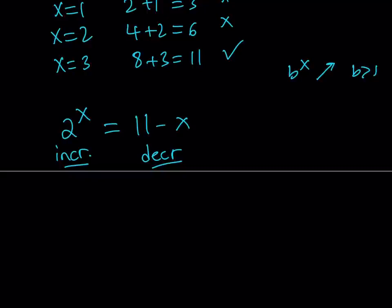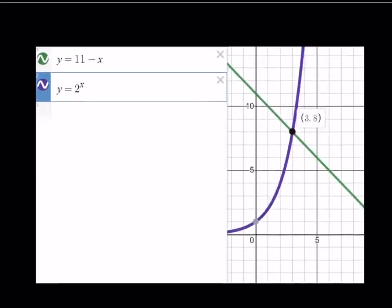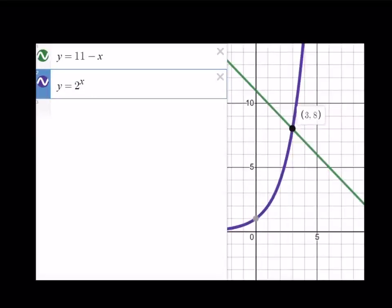Now, what happens if you have an increasing function and a decreasing function intersecting at a point? And that is going to be the only intersection point. So let's go ahead and take a look at the graph of these two functions together. Now you're going to know what I'm talking about. So here's the graph of y equals 11 minus x, which is the green line,